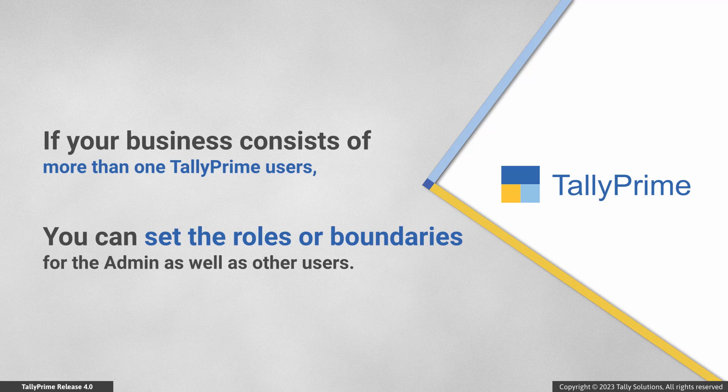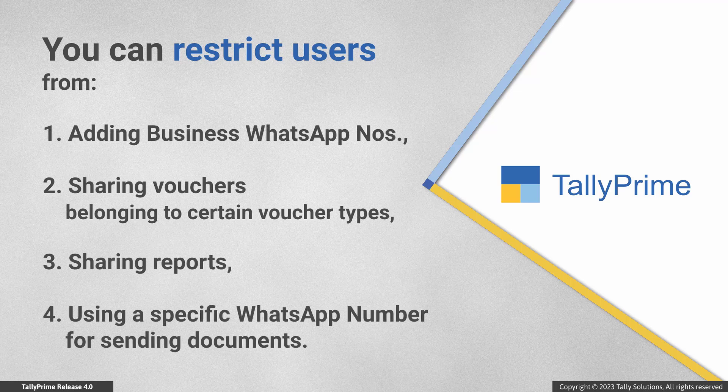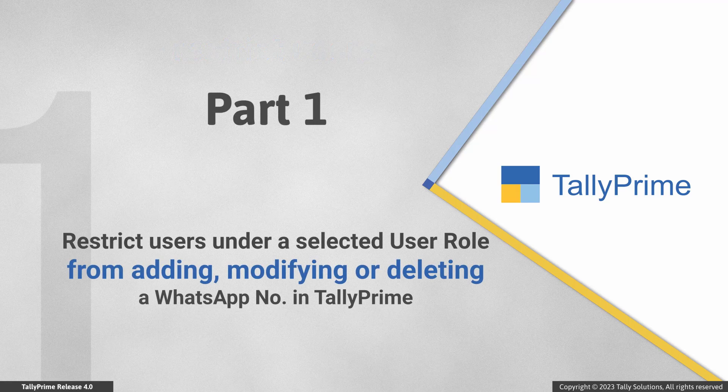TallyPrime has just the right solution for you, using which you can set up permissions for users under user rules. This video will show how you can restrict users from adding business WhatsApp numbers, sharing vouchers belonging to certain voucher types before saving, sharing reports, and using a specific WhatsApp number for sending documents.